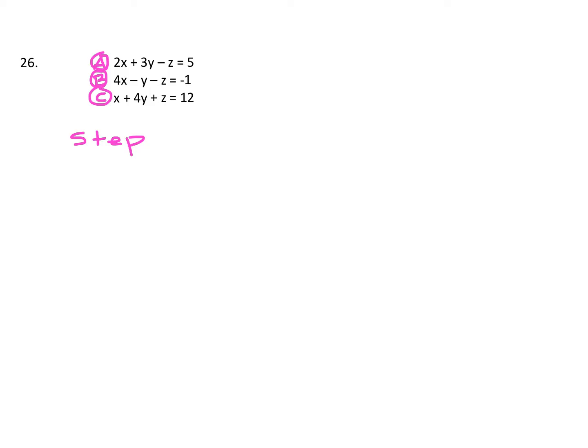In step one, what you're going to do is line up any two of these equations and try to get one of the variables to cancel out when you combine like terms. For example, let's look at the Z's. See here how equation C has a positive Z and equation A has a negative Z? If I line up equation A and equation C and combine like terms, I can get the Z's to cancel off. That's the goal in step one.